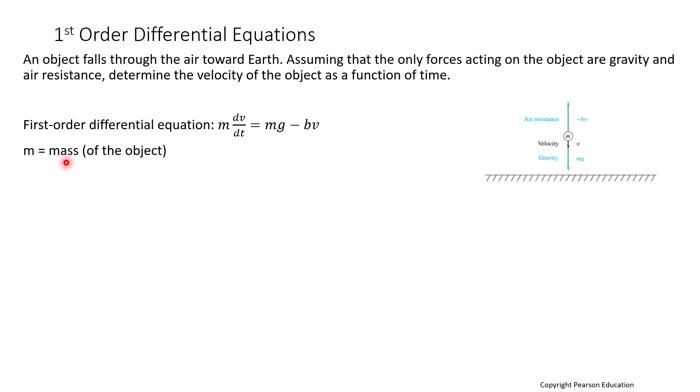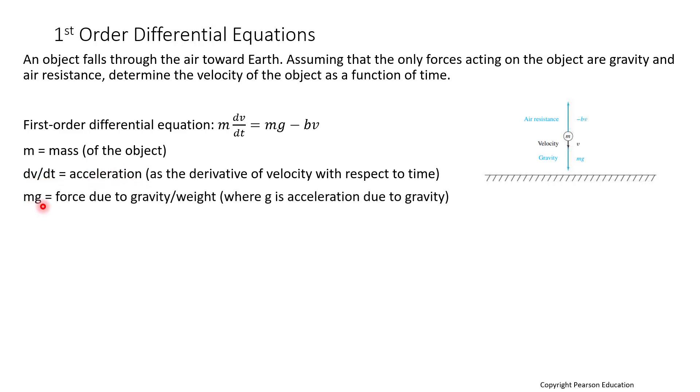M represents mass of the object, dv/dt, the derivative of velocity with respect to time, is acceleration, mg is a force due to gravity or weight, and then g is our acceleration due to gravity.